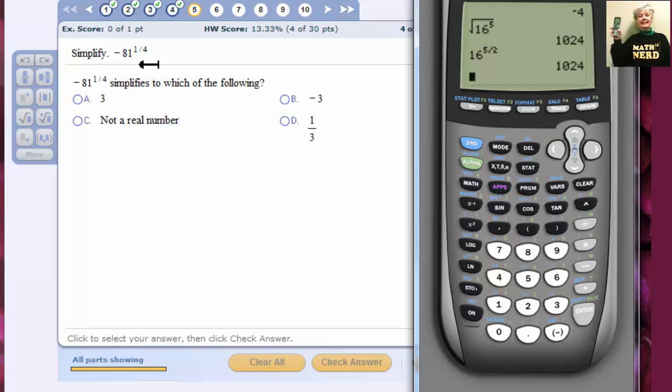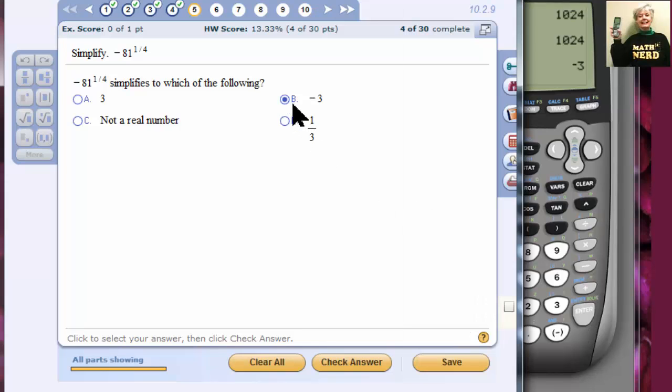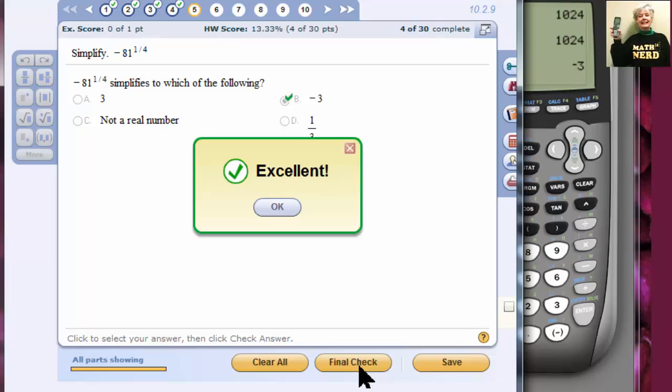Negative 81 to the 1/4 power. Again, there are no parentheses, so the negative sign is separate. Negative 81, up arrow, 1 divided by 4. I usually hit the right arrow key to tell the calculator I'm done. Then I hit enter. Negative 3 would be my answer. Check it. Yes.